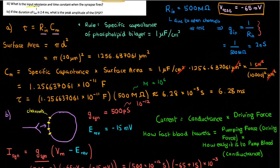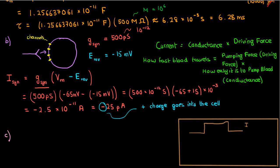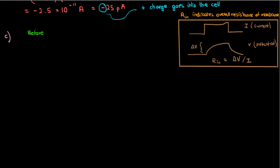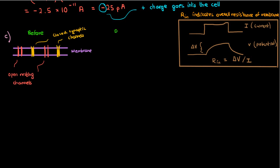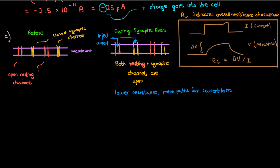The third part asks what the input resistance and time constant of the neuron are when the synapse fires. The input resistance or conductance tells you how much the membrane potential changes in response to an injection of current — it reflects the overall resistance of the cell in terms of how open its membrane channels are. Before the synaptic event, only the resting channels were open. But during the synaptic event, both the resting channels and the synaptic channels are open, so the input resistance will be lower because there are more paths for current to travel through.